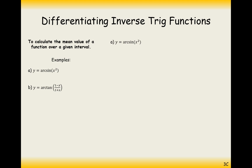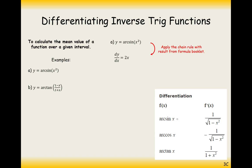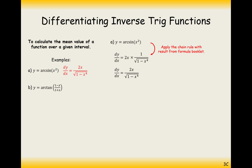y equals arc sine of x squared — this is a chain rule differentiation. Differentiate the inside to get 2x, then differentiate the outside using the formula booklet. The derivative of arc sine is 1 over √(1 − u²), but in terms of the inside function, so it's 1 over √(1 − x⁴). The answer is 2x over √(1 − x⁴).